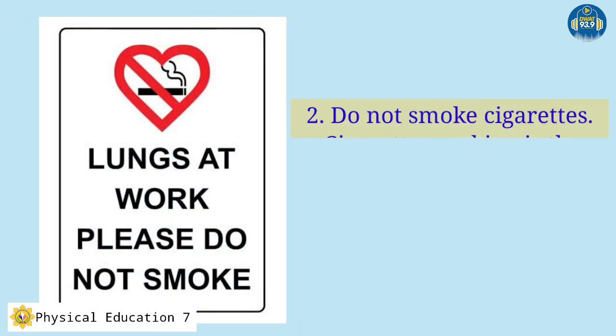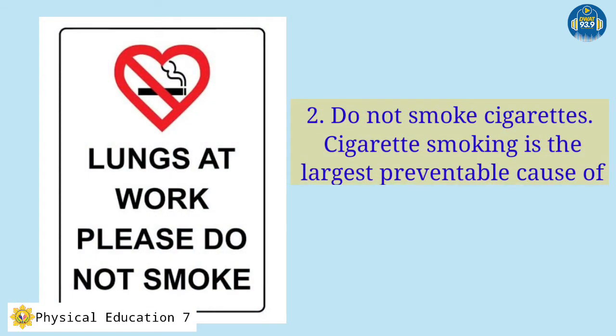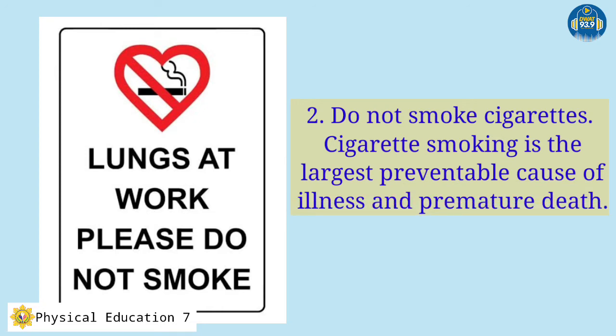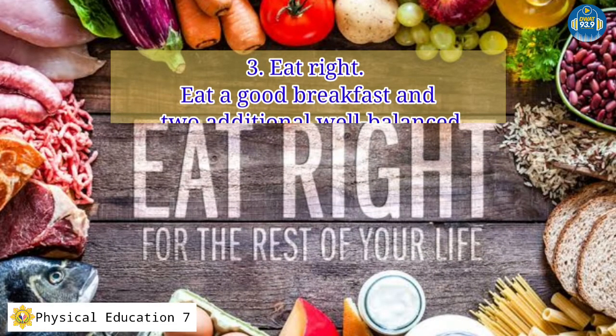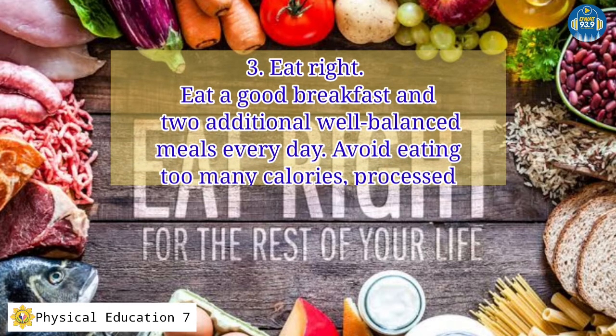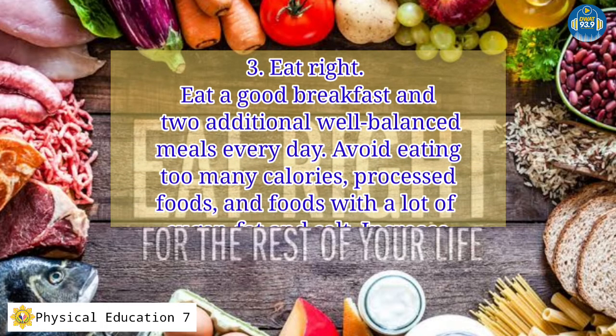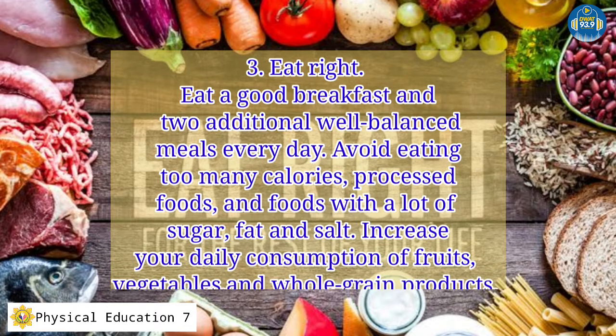Do not smoke cigarettes. Cigarette smoking is the largest preventable cause of illness and premature death. Eat right: eat a good breakfast and 2 additional well-balanced meals every day. Avoid eating too many calories, processed foods, and foods with a lot of sugar, fat, and salt. Increase your daily consumption of fruits, vegetables, and whole grain products.